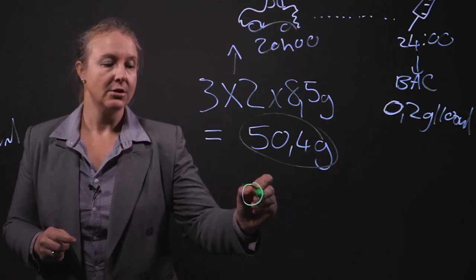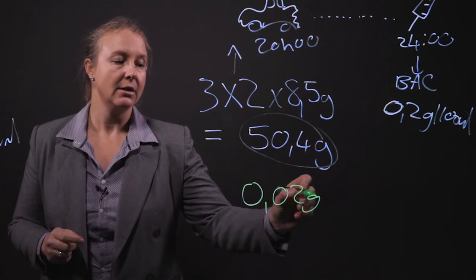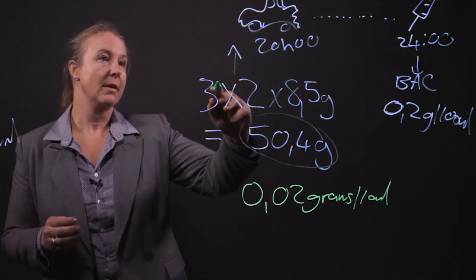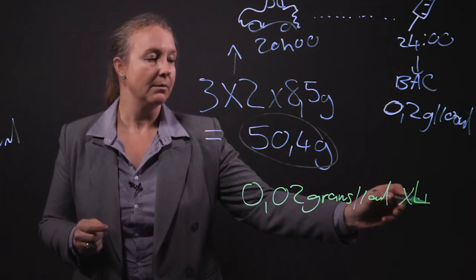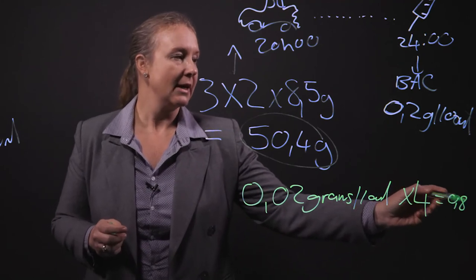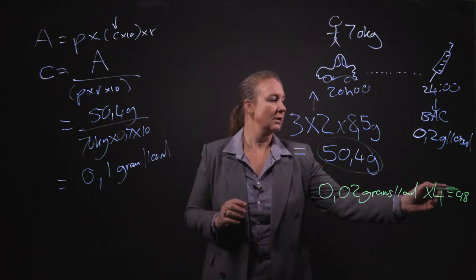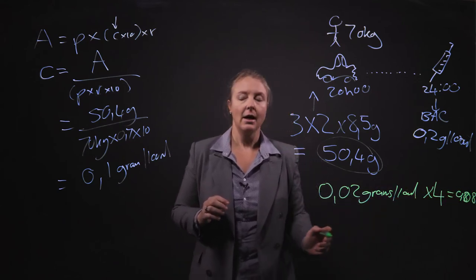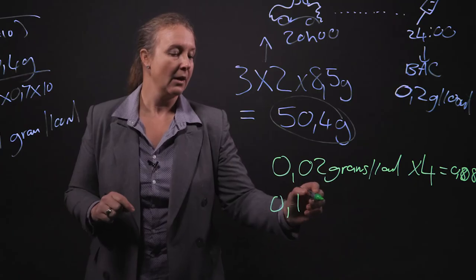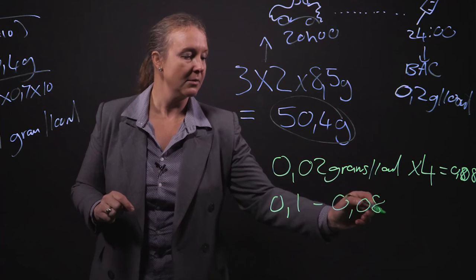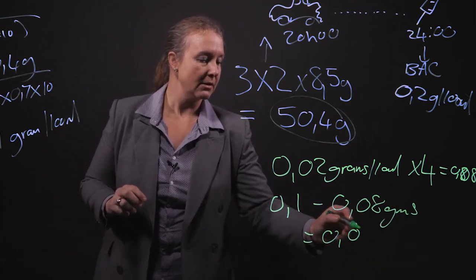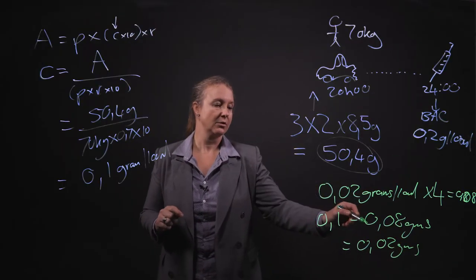If we take elimination of alcohol, which happens at a steady rate of 0.2 grams per 100 moles in an hour, and remember this is a four-hour period, we have to multiply this by four, we would get 0.08. And if we need to subtract this now, 0.1 gram minus 0.08 grams which has been eliminated, we get 0.02 grams at the time point of 12 o'clock.